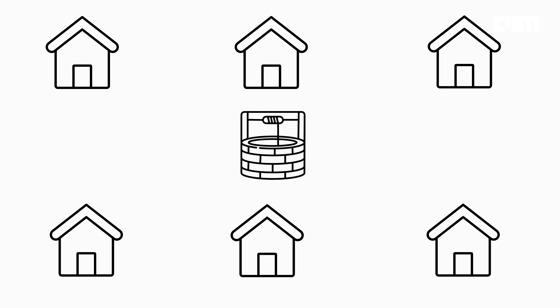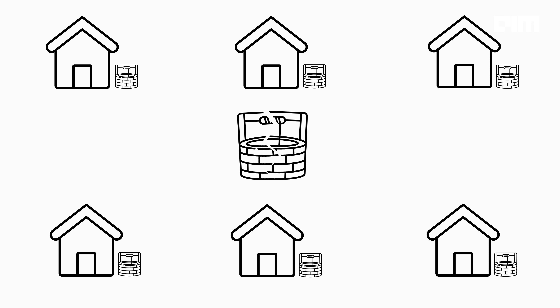Imagine running a massive AI model like Llama 3.1 with its 405 billion parameters on a regular computer or even your smartphone. Sounds impossible, right? Well, not anymore — all thanks to peer-to-peer networks. Let me give you an example.